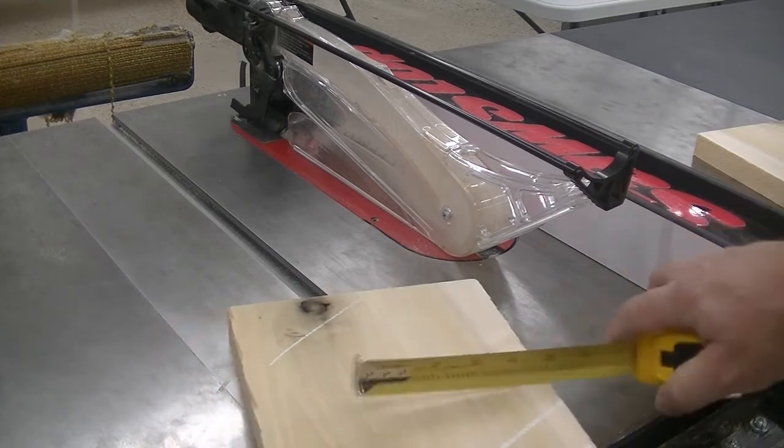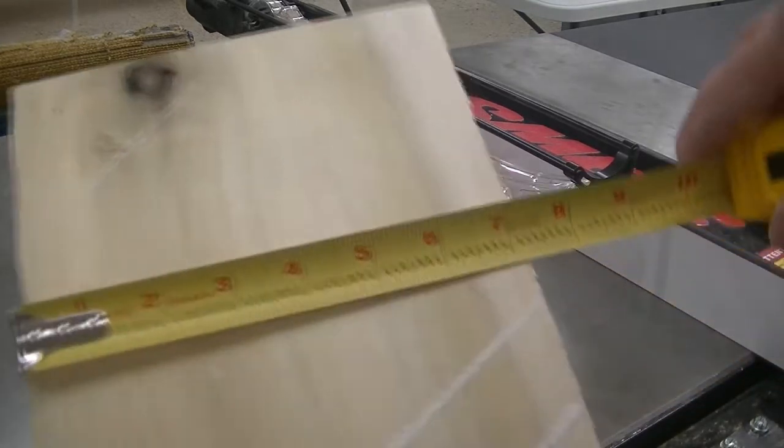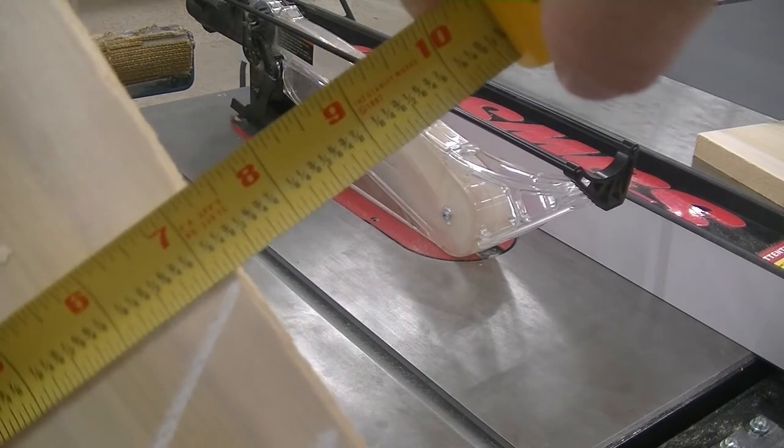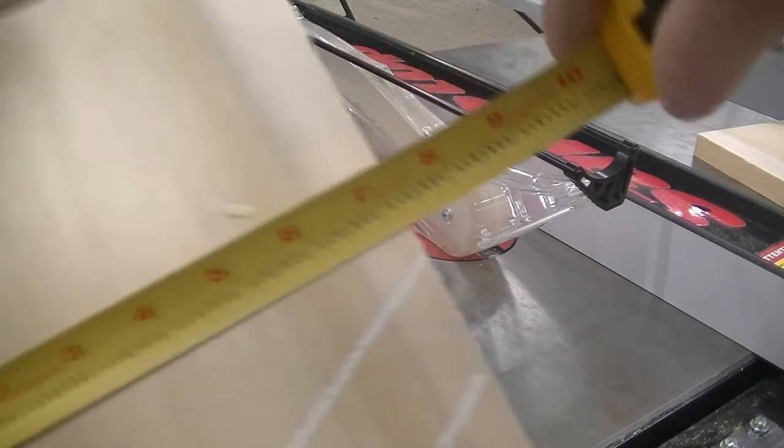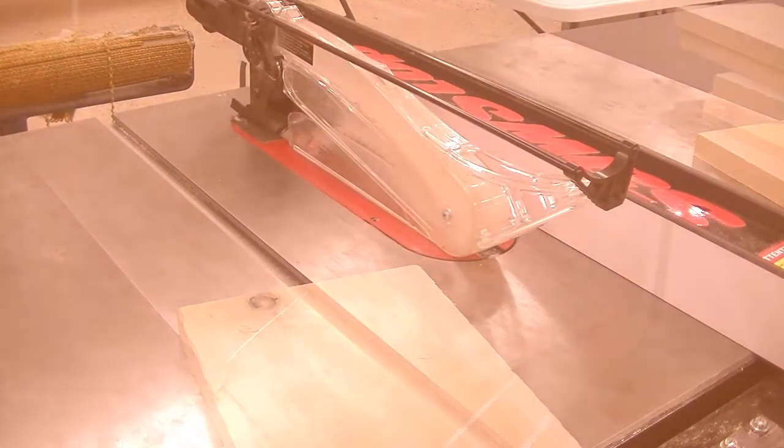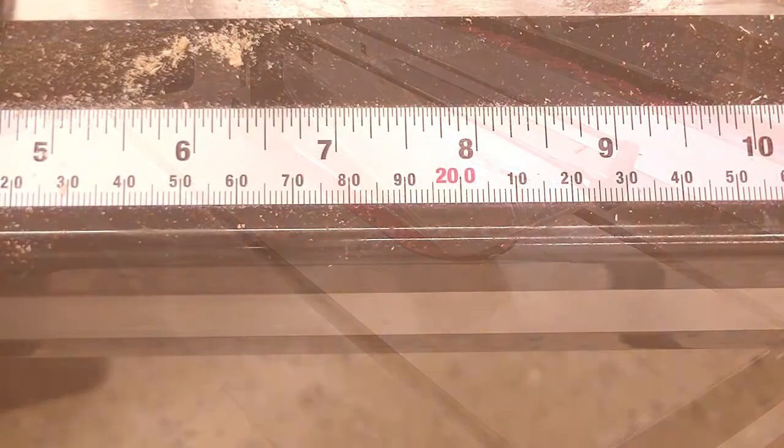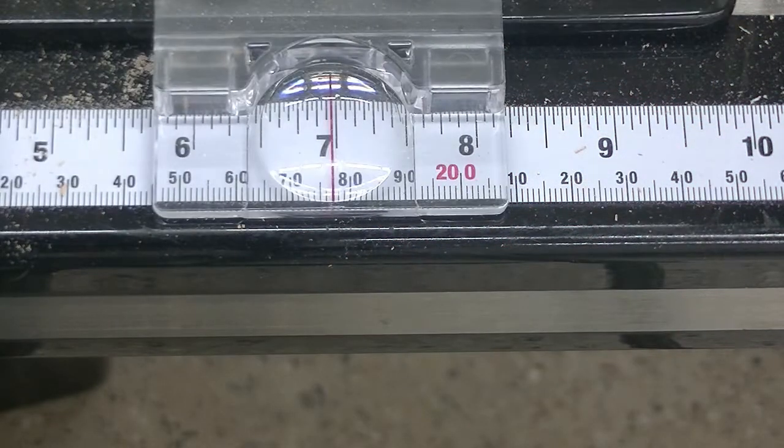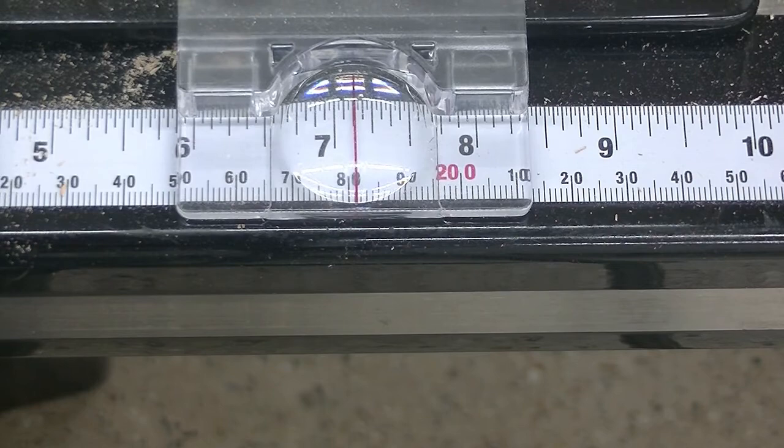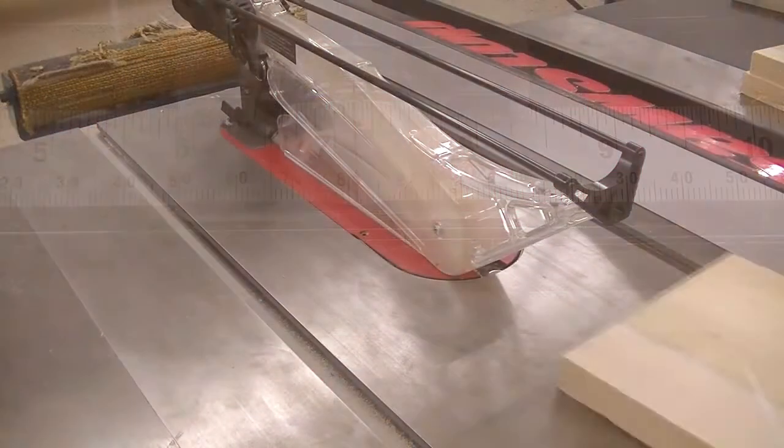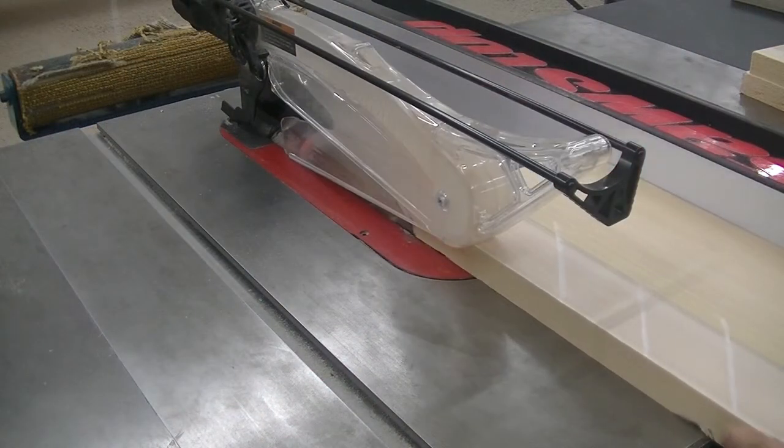In this case, we are going to set the saw for seven and one eighth of an inch, just to trim off just a little bit. Make sure the lines that match the seams are toward the blade.